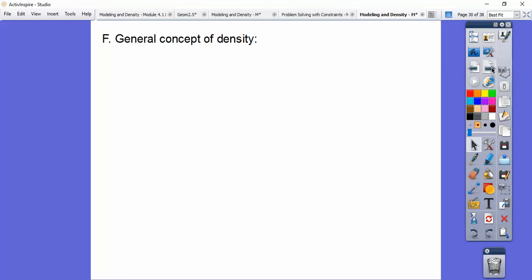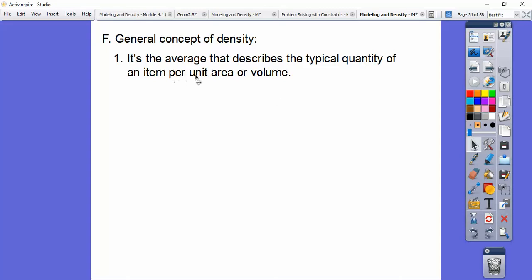So general concepts of density, it's the average that describes the typical quantity of an item per unit area or volume. So per unit area or per unit volume. So that's what density is. Our density is we want to find it per unit area or per volume.